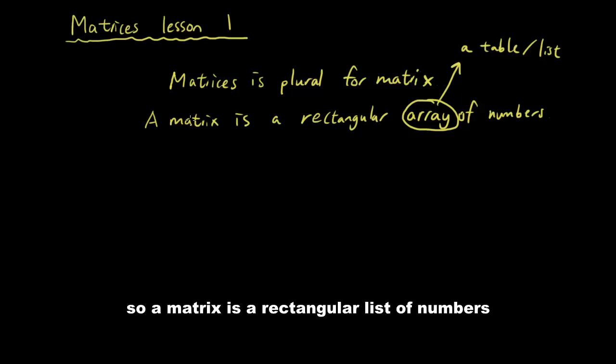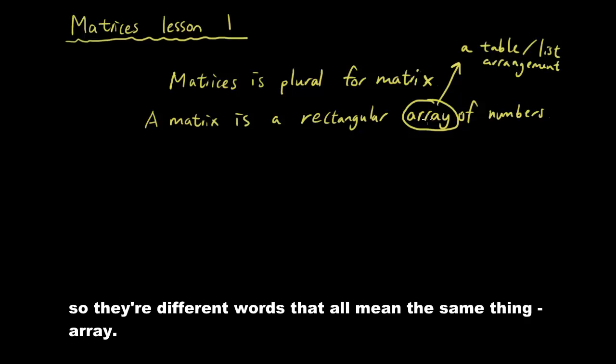So the word array just means a table or a list. So a matrix is a rectangular list of numbers or an arrangement. So there are different words that all mean the same thing, array.